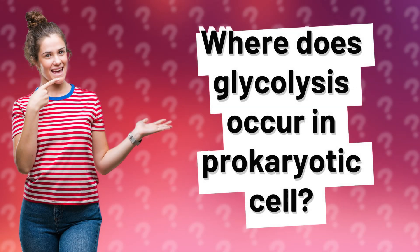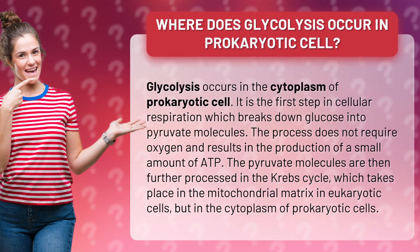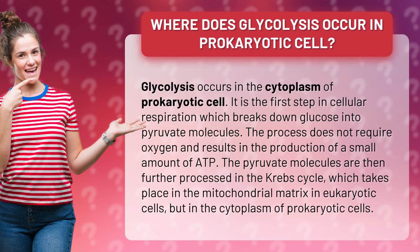Where does glycolysis occur in prokaryotic cell? Glycolysis occurs in the cytoplasm of prokaryotic cell.